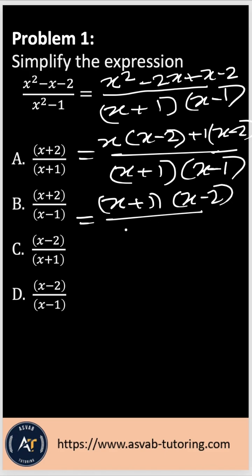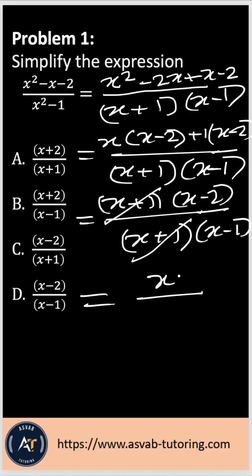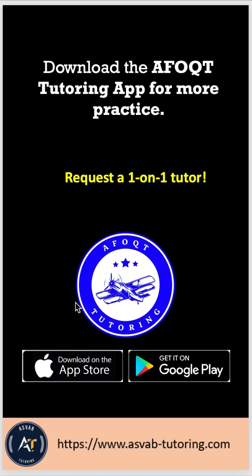Now what you could do is cancel x plus 1 from top and bottom. So then you have x minus 2 over x minus 1. That is the final answer, option D.